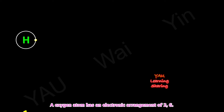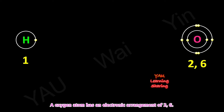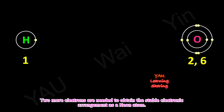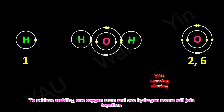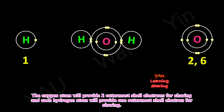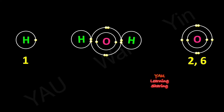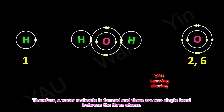An oxygen atom has an electronic arrangement of two, six — two more electrons are needed to obtain the stable electronic arrangement of a neon atom. To achieve stability, one oxygen atom and two hydrogen atoms will join together. The oxygen atom will provide two outermost shell electrons for sharing, and each hydrogen atom will provide one outermost shell electron for sharing. Therefore, a water molecule is formed, and there are two single bonds between the three atoms.